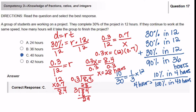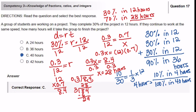For the total time: 30% of the job took 12 hours, and 70% of the job took 28 hours. Adding those together, 12 plus 28 equals 40 hours. Again, that's the answer.